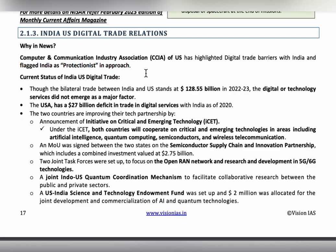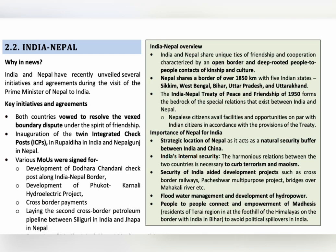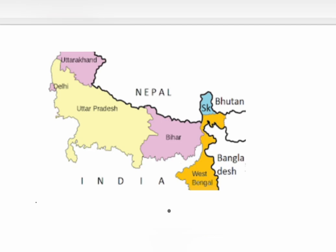The next topic is India and Nepal relations. Nepal is one of our neighboring countries and shares a border with five Indian states: Sikkim, West Bengal, Bihar, Uttar Pradesh, and Uttarakhand. The border length is 1,850 kilometers. India shares an open border with Nepal, and Nepali citizens can avail the same facilities and opportunities as Indian citizens as per the India-Nepal Treaty of Peace and Friendship of 1950.